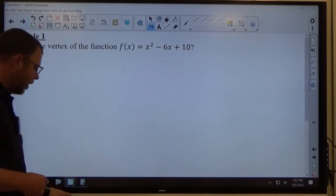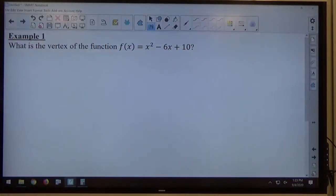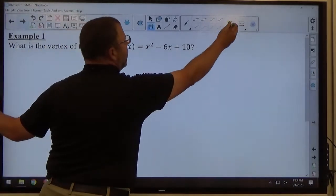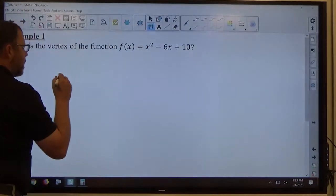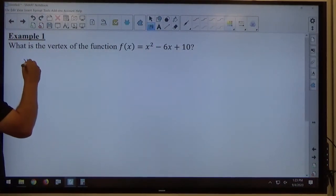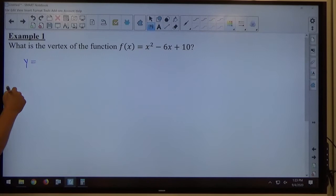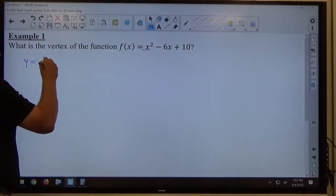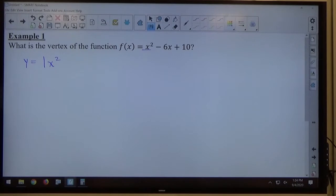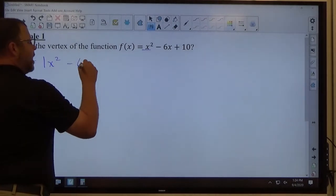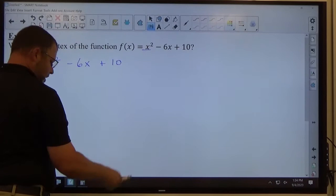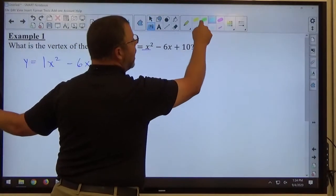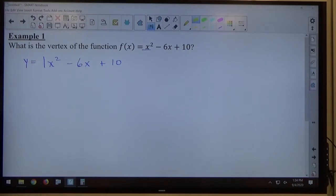Example 1. What is the vertex of the function f of x equals x squared minus 6x plus 10? So, first off, any time you look at a quadratic function, I personally prefer y to f of x. So, I'm going to go y equals. I want to see those numbers a, b, and c. I want to actually be able to see those numbers from my eyes. So, when they've got x squared with no number in front, I'm going to write that as 1x squared.